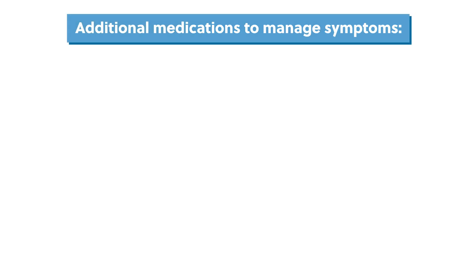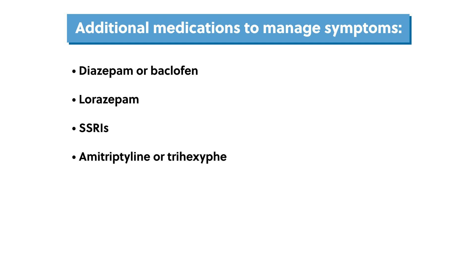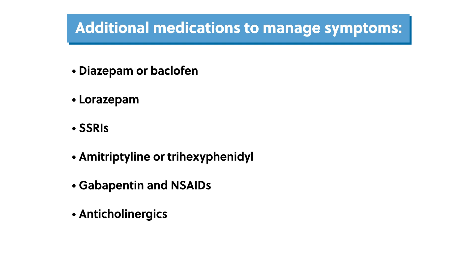Additional medications to manage symptoms may include diazepam or baclofen to reduce muscle spasticity, lorazepam to reduce anxiety, SSRIs to reduce depression, amitriptyline or trihexyphenidyl to reduce saliva and drooling, gabapentin and NSAIDs to reduce pain, anticholinergics such as scopolamine and glycopyrrolate to reduce drooling, and dextromethorphan and quinidine to control the pseudobulbar effect.